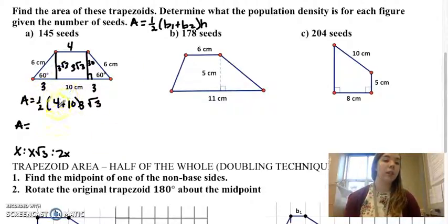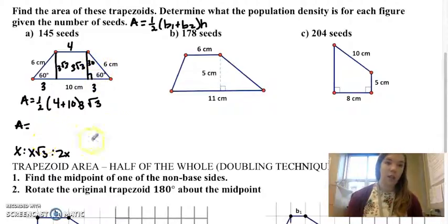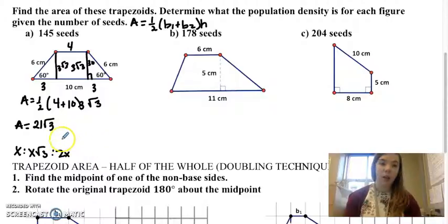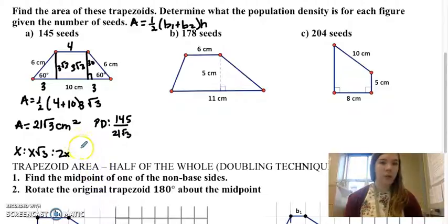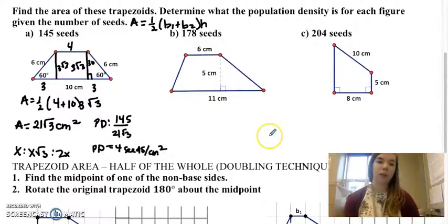So half of 14 is 7 times 3 root 3 would be 21 root 3, and you can put that in a calculator if you want. Square centimeters. To find my population density, I have to take the number of seeds divided by 21 root 3. And I'm going to round this to 4 seeds per square centimeter. All right, so that's the first one.